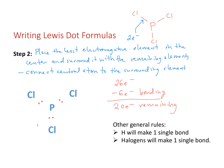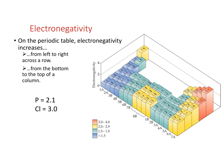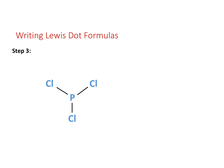Step one: determine total valence electrons. Step two: assign the least electronegative element to the center and surround it with remaining elements. To confirm, electronegativity increases from lower left to upper right on the periodic table, so phosphorus is farther to the left and less electronegative than chlorine — we made the right choice. Step three: fill the octet of each surrounding element using the remaining valence electrons.